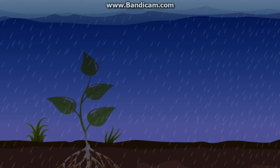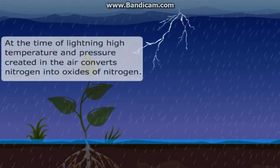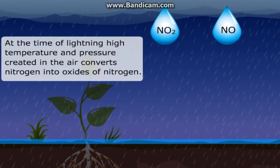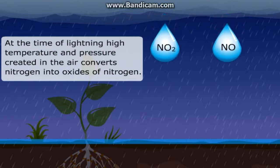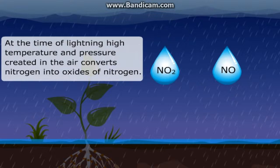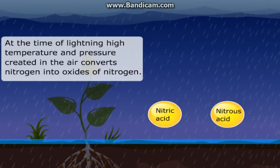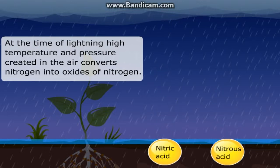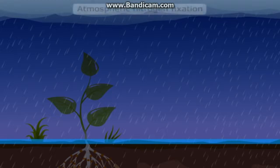Nitrogen fixation also takes place during lightning. At the time of lightning, high temperature and pressure created in the air converts nitrogen into oxides of nitrogen. These oxides dissolve in rain water to form nitric and nitrous acids. This process is called atmospheric nitrogen fixation.